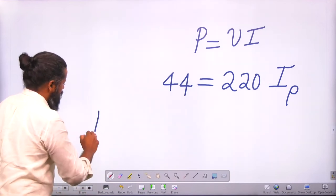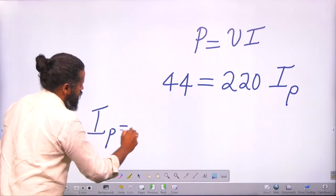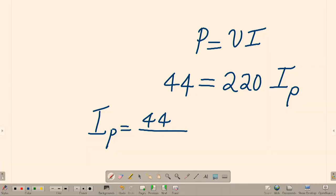So IP we can find out. How much is IP? IP is going to be equal to 44 divided by 220. 220 we can write down as 22 multiplied by 10.